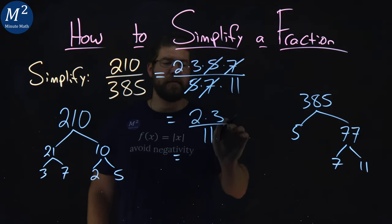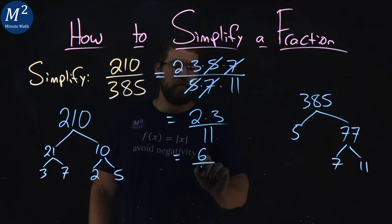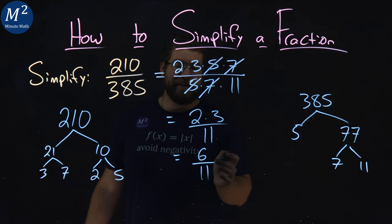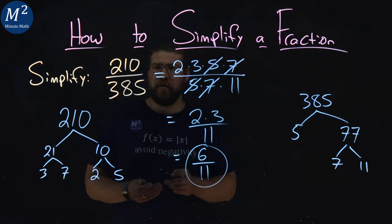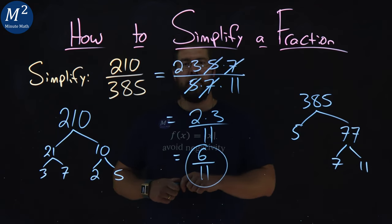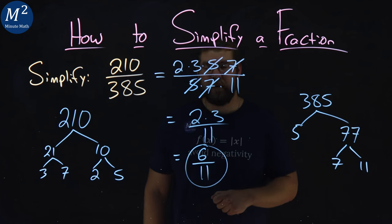Now 2 times 3 simplifies to be 6 over 11, and there we have it. It doesn't simplify anymore. And so 210 over 385, if you could guess it, was 6 over 11.